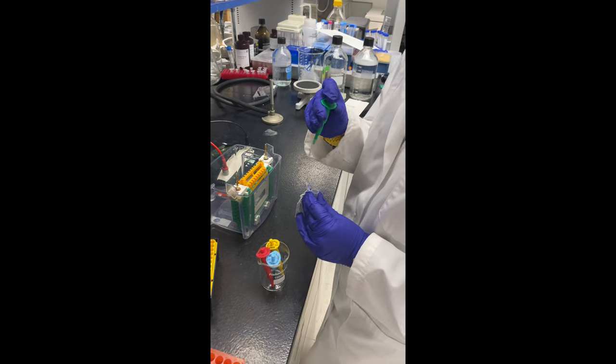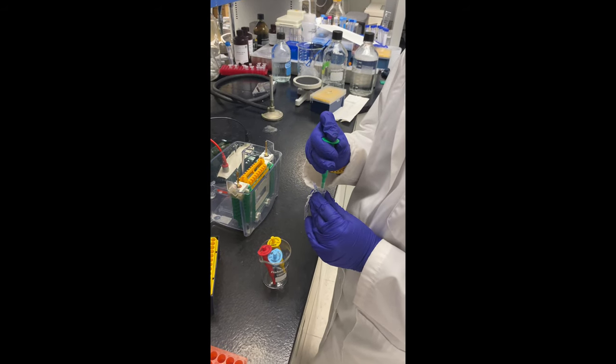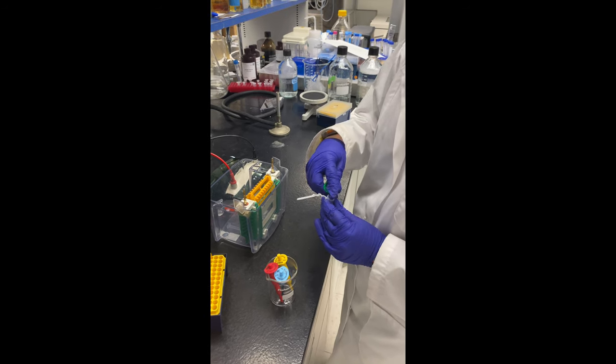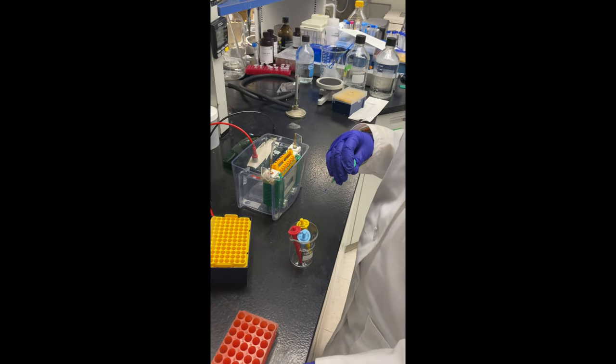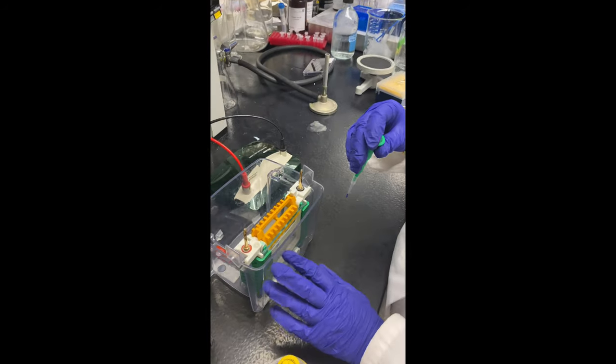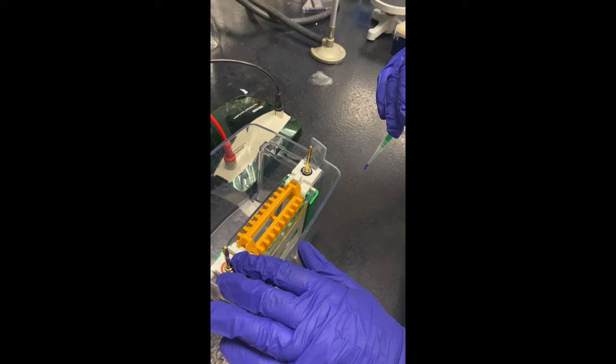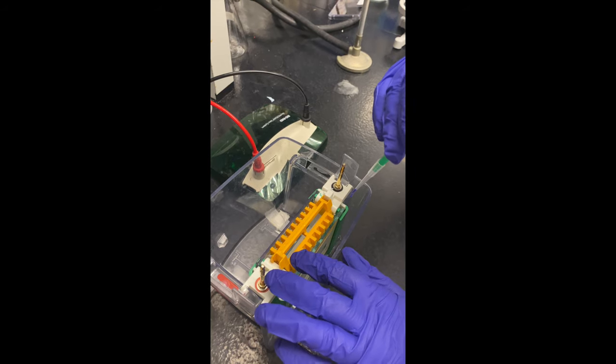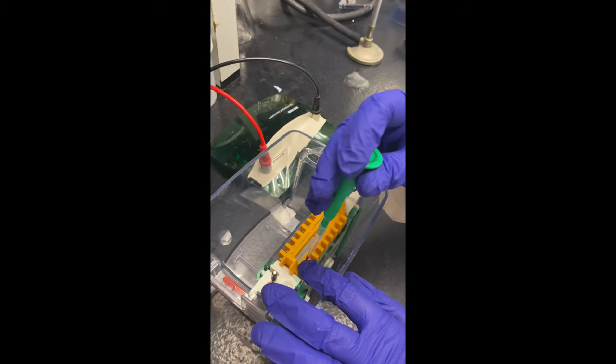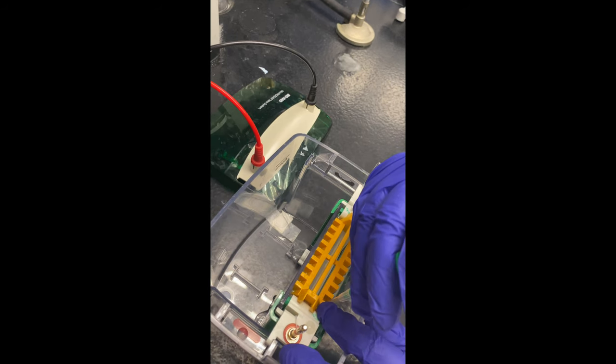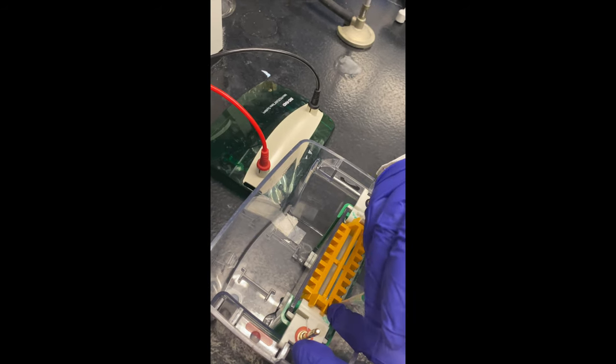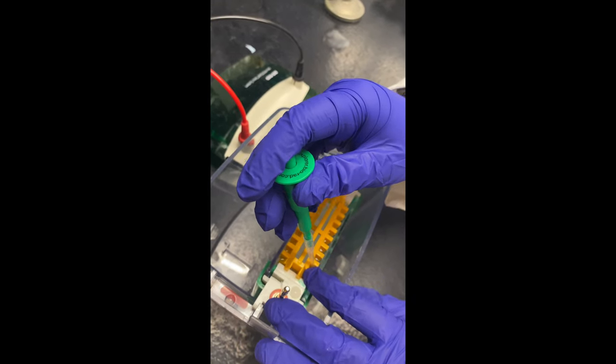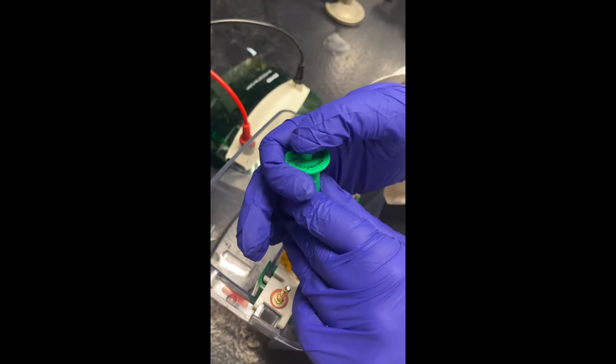The SDS loading dye has a chemical called BME in it and it smells bad. So just close that cap. And then you can feel the gaps in the loading guide for the second lane. And then stick the tip in and wedge in between the two glass plates and angle it a bit too, so it is in the right area. You got it, Emmy. And slowly depress the pipette button.